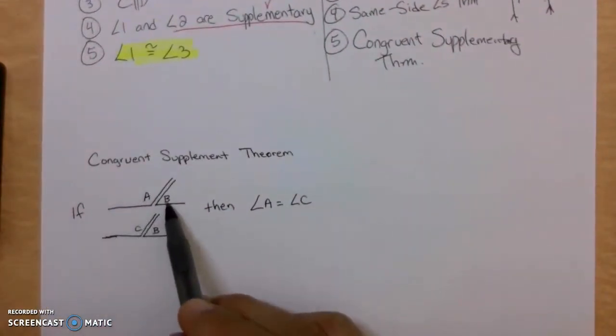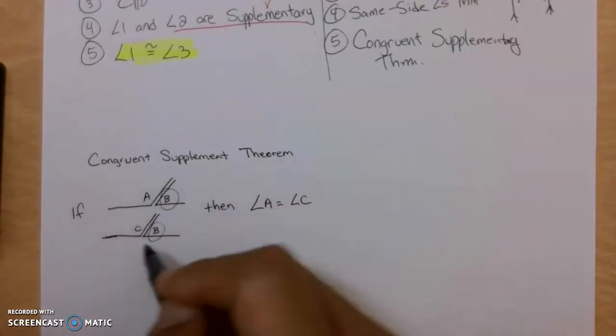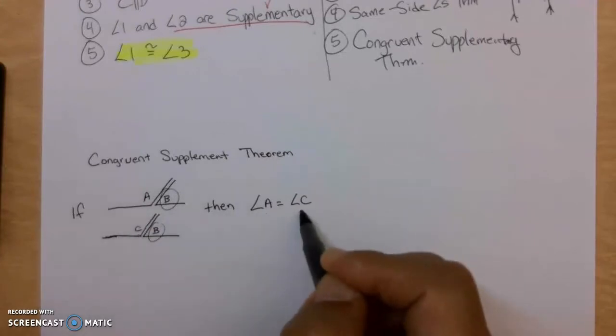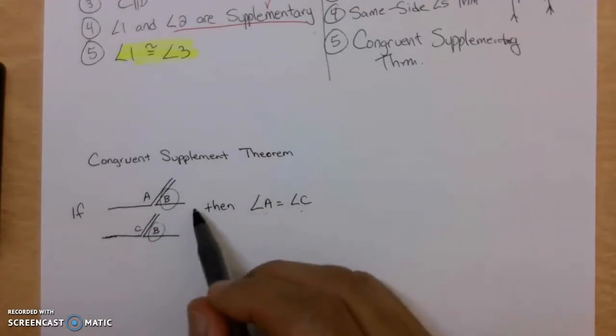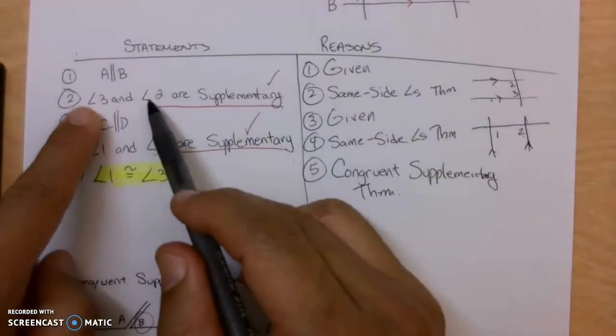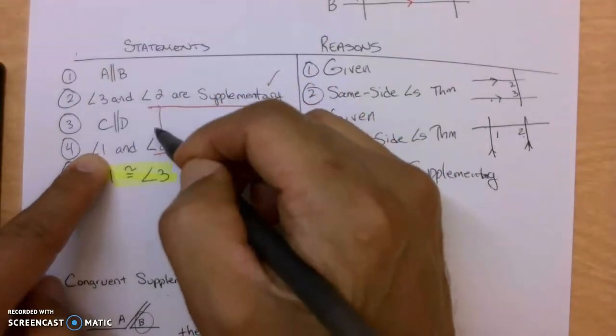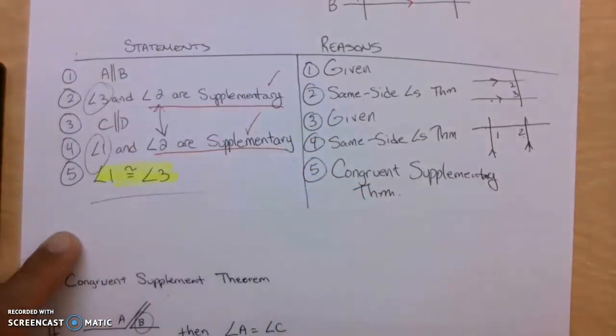I drew a picture of it here below. If Angle A and B are supplementary, and Angle C and B are supplementary, they're supplementary to the same angle, then these two, Angle A must be equal to C. They are congruent because they are supplementary to the same angle. 3 is supplementary to 2, 1 is supplementary to the same angle, and so that makes these two equal, Step 5.